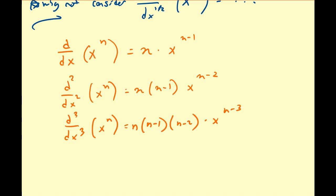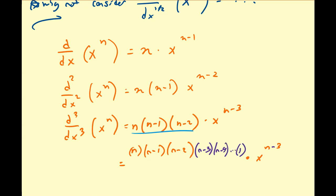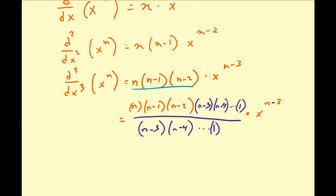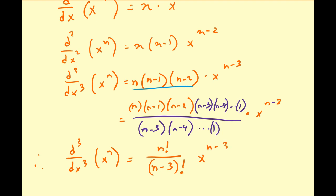Let's see if we can get a pattern here. If you look at this leading coefficient, that's pretty much like a factorial, except we're missing some pieces down the line. We can rewrite this as n times n minus one times n minus two times x to the n minus three, and input some terms: n minus three times n minus four all the way down to one, dividing by the same. So the third derivative of x to the n equals n factorial over (n minus three) factorial, times x to the n minus three.